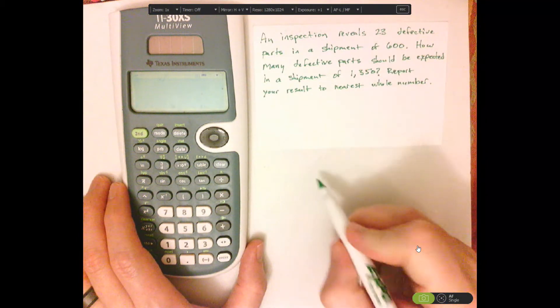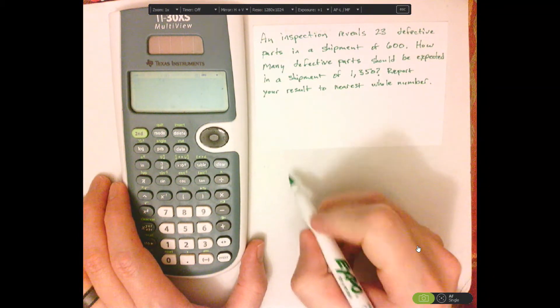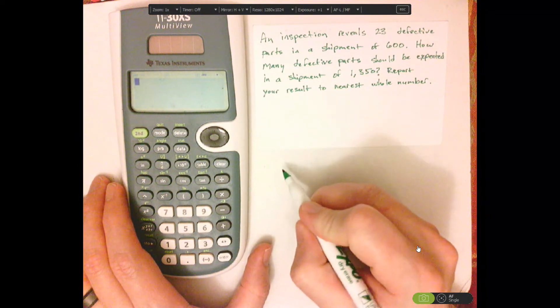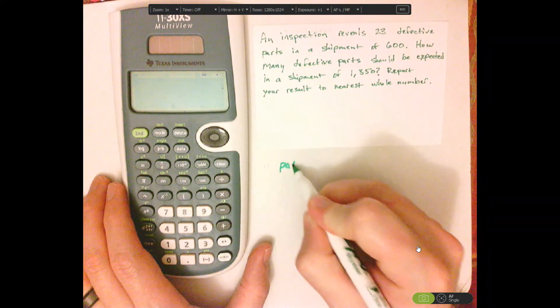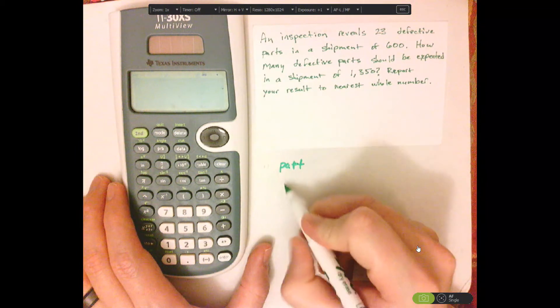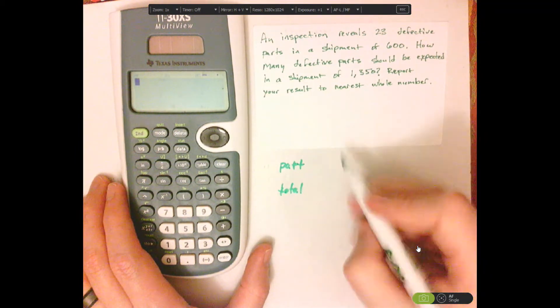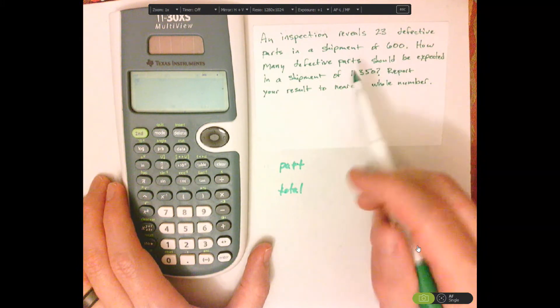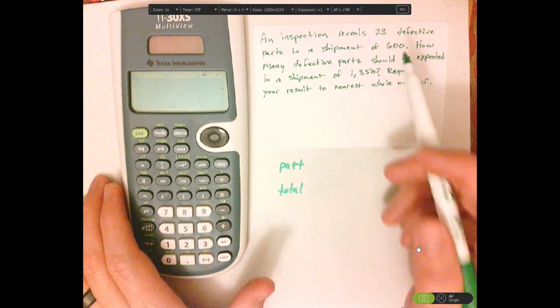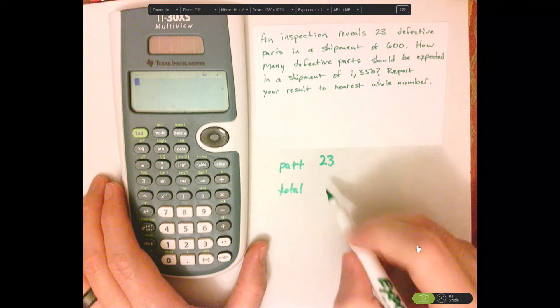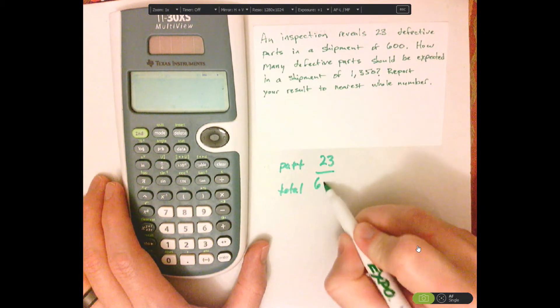So the way that you would set this up is, with proportions, everything has to line up. Parts over the total. The inspection reveals 23 over 600.